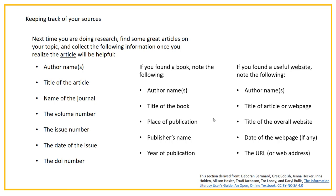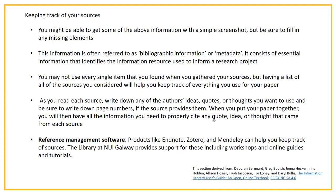You need to somehow keep track of all this information in order to cite it properly when you're actually doing your writing. You might be able to get some of the above information with a simple screenshot, but be sure you've got all of the elements — fill in any blanks. That information is referred to as bibliographic information or metadata, and it consists of the essential information that identifies the information resource used to inform a research project. You might not use every single item you found, but having a list of all the sources you've considered will help you keep track of everything.